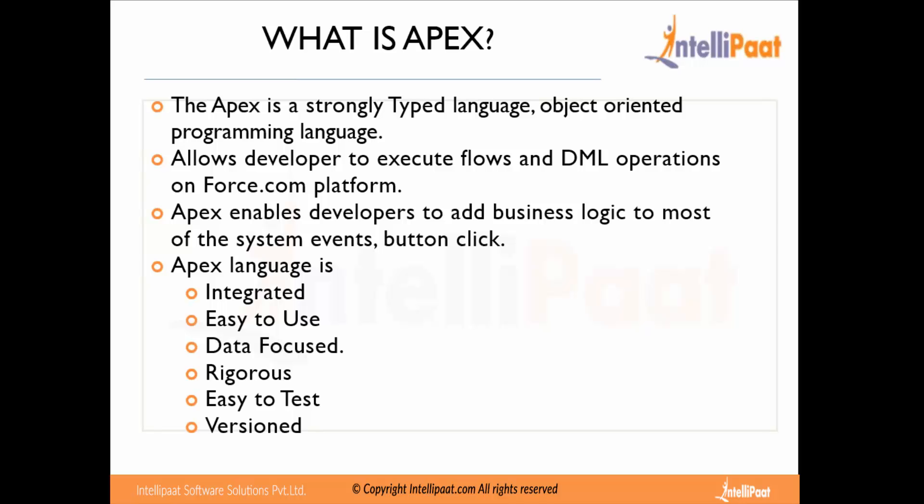The last point is versioning. All releases in Salesforce are versioned, so your Apex programming language is also versioned — as of now we are working on version 32. The best part of versioning is that your lower versions will never fail on higher versions; in other words, upgraded versions never break the lower versions. That's what Apex programming is all about.